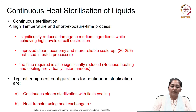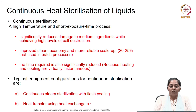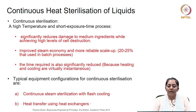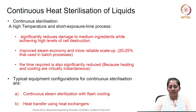We have been discussing about the batch sterilization cycles. Let us see what is a continuous sterilization process used generally in industry. Continuous sterilization process is generally based on a high-temperature and short-exposure-time process. This can significantly reduce the damage to medium ingredients while achieving high levels of cell destruction. Further, this can improve steam economy and with scale-up, the efficiencies are more reliable. The time required is also significantly reduced, the reason being the heating and cooling are virtually instantaneous.